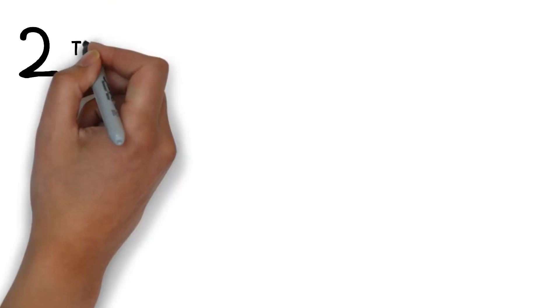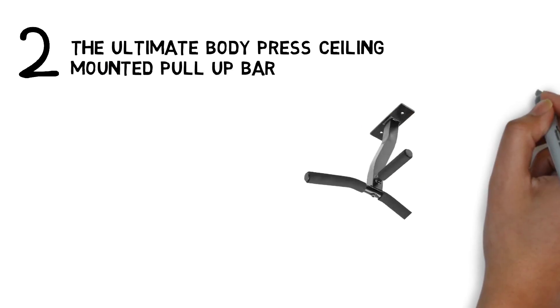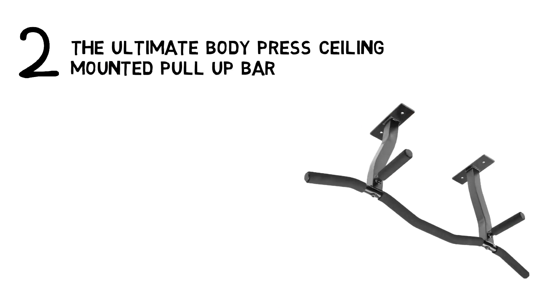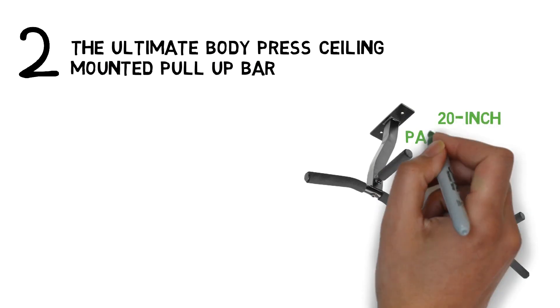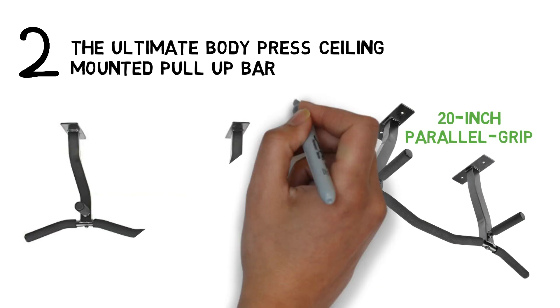At number 2 we have the Ultimate Body Press Ceiling Mounted Pull-Up Bar. The ceiling-mounted pull-up bar from the Ultimate Body Press has three density foam grip positions for standard, wide grip, and the 20-inch parallel grip pull-ups or chin-ups. This model has a powder-coated finish for added durability.